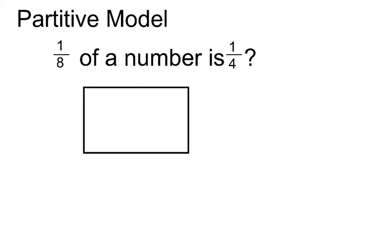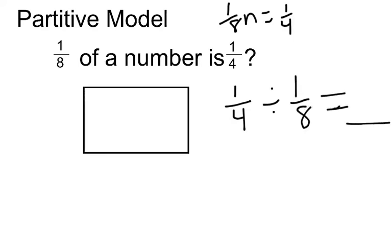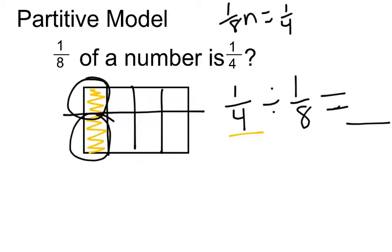Let's look at another example. We have 1 eighth of a number is 1 fourth. Which is another way of saying 1 fourth divided by 1 eighth is what? So first we need to figure out 1 fourth. We're going to start with our first. We have half and we have quarters. So I have 1 fourth here. So now, I can divide it into eighths.